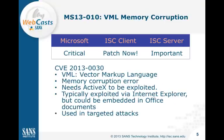Next we have MS-1310, a memory corruption vulnerability in VML that can be used to execute arbitrary code. This would typically be exploited via Internet Explorer, but it's listed as a separate vulnerability — not part of the Internet Explorer rollup — because it's really an ActiveX vulnerability, and ActiveX can also be embedded in Office documents. This particular vulnerability has been used in targeted exploits, which is why we rated this 'patch now.' The exploit is already available.